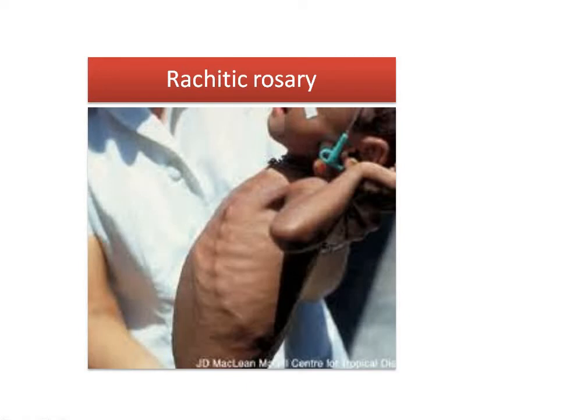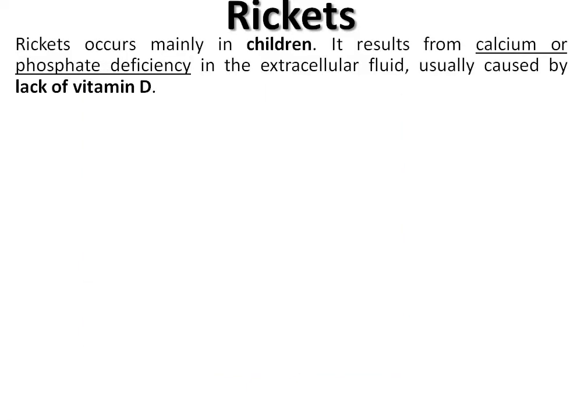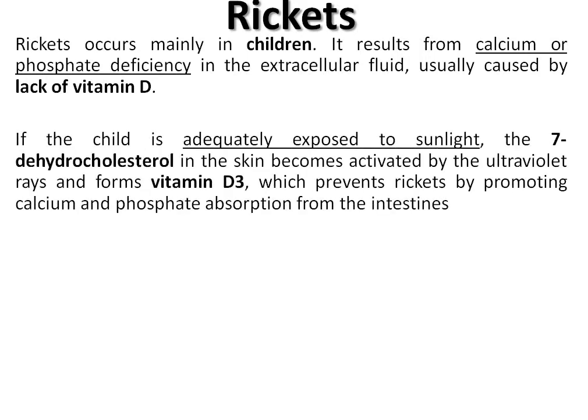This diagram shows the beaded appearance of the ribs — the typical term given to this is rachitic rosary. You can also see a pigeon-shaped chest. Rickets occurs in children and results from either calcium or phosphate deficiency in the extracellular fluid, caused by lack of vitamin D.